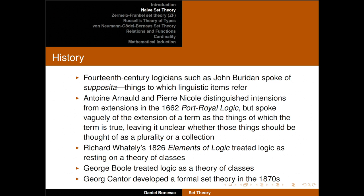Antoine Arnauld and Pierre Nicole distinguished intensions from extensions in their 1662 book, the Port Royal Logic. But they spoke vaguely about extensions of terms — they talked about them as the things of which the term is true. And that leaves it unclear whether those things should be thought of as a plurality, just a bunch of things, or a collection.